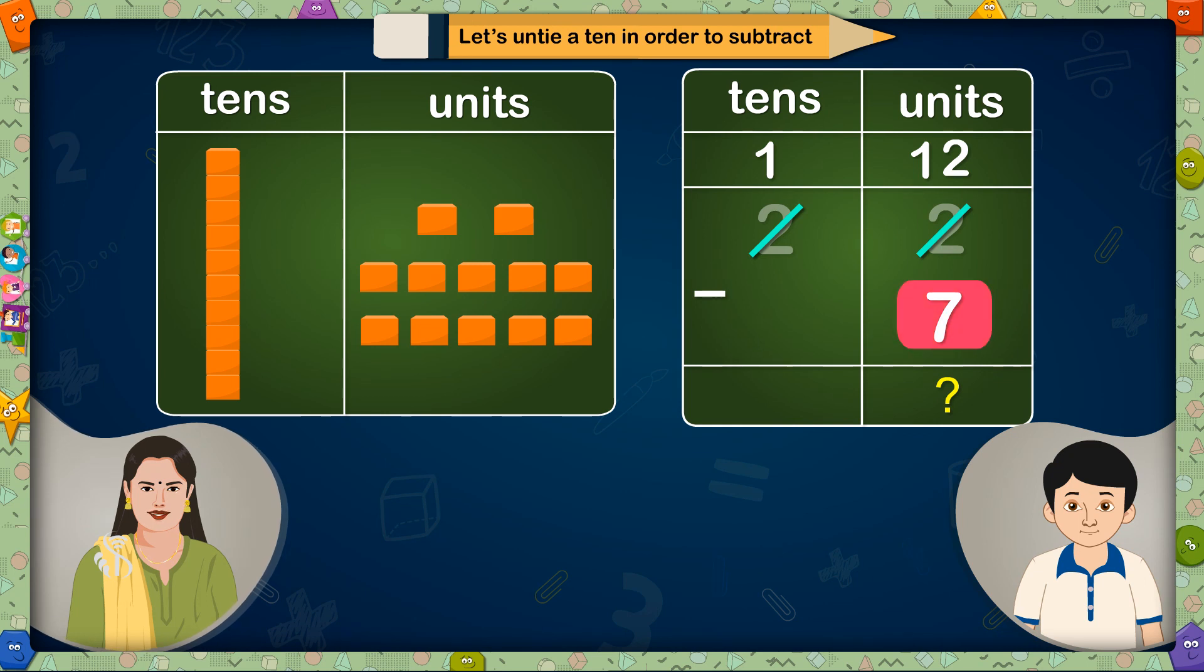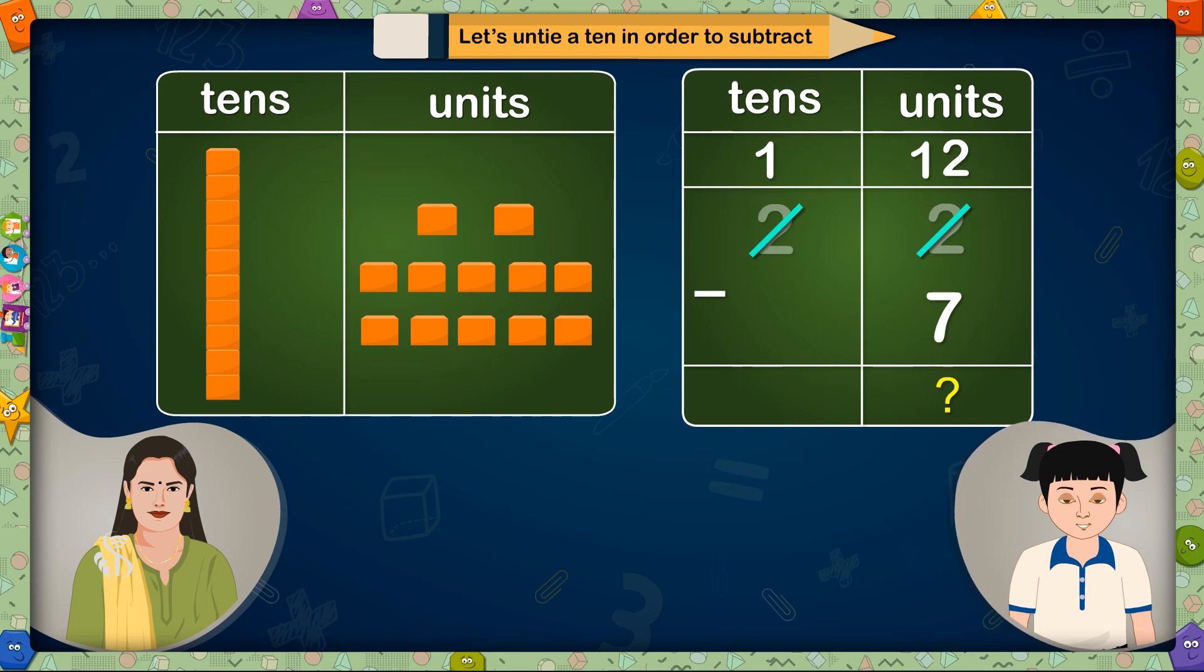Very good! Can we reduce 7 units from these 12 units? Yes madam! 5 units will remain after reducing 7 units from 12 units. That's right! And only 1 ten is remaining in tens place. We will write it as it is in the answer. So 22 minus 7 equals 15.